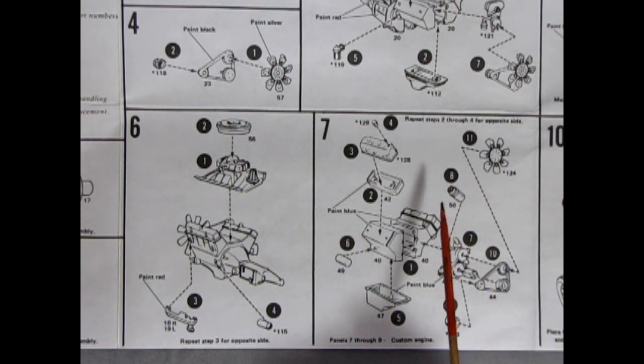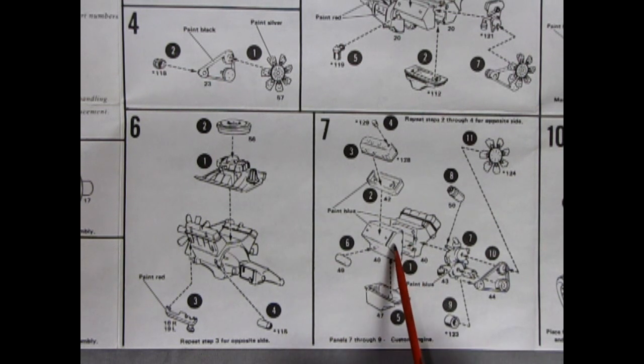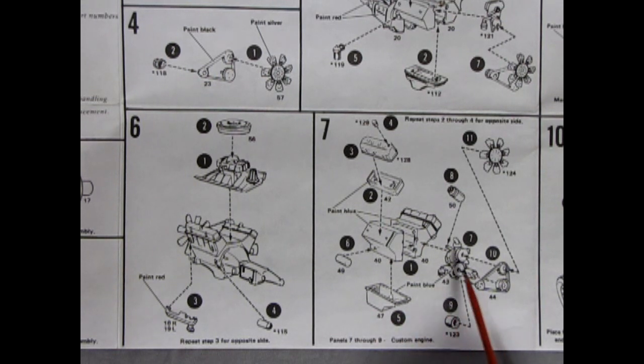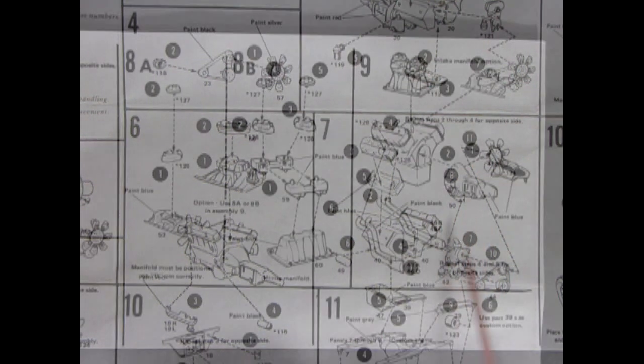Panel seven shows our 426 Hemi going together. We've got the breathers going on the valve covers as well as our cylinder heads gluing onto our two piece engine block, our starter motor gluing on the side, our oil pan, then we've got our front engine cover, our belts, the alternator, the fan with the clutch, and our oil filter gluing all into here.